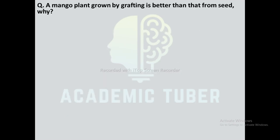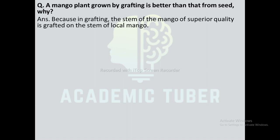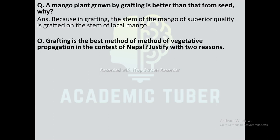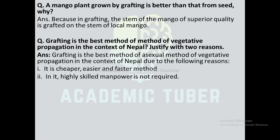Next question: A mango plant grown by grafting is better than that from seed — why? A mango plant grown by grafting is better than from seed because in grafting, the stem of a mango of superior quality is grafted on the stem of local mango. Grafting is the best method of vegetative propagation in the context of Nepal because it is cheaper, easier, and faster, and highly skilled manpower is not required.